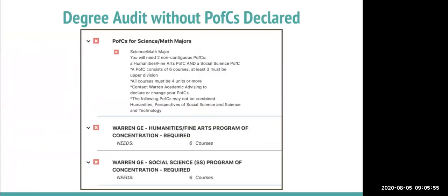When you do not declare your PFCs or area studies, the checkbox next to your GE requirements will be red. This student has not declared their humanities and fine arts program of concentration, so they still need to declare it and complete six courses — three lower division and three upper division. They have also not declared their social science PFC and will need to complete three lower division and three upper division courses for that as well.